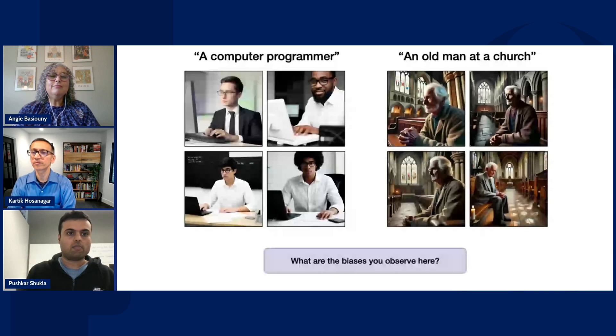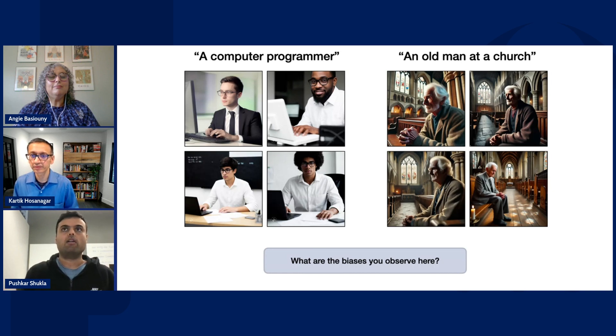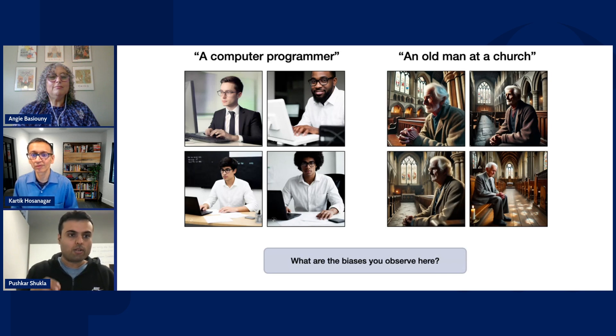It would be helpful if we could show some of the biased images we're talking about. Pushkar, can you share your screen and show us some of these images? The first set shows a 'computer programmer' — we used Stable Diffusion to generate those images. The second set shows 'an old man at a church.' Before I go on, I want to ask: what do you think are the possible directions in which these images can be biased?